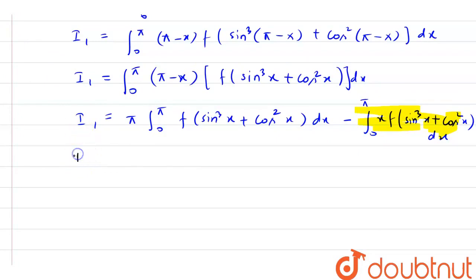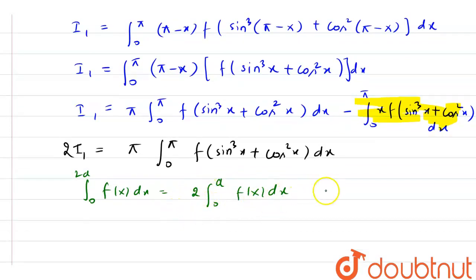Now, I am going to use another property that is if we have limit 0 to a, f of x dx, then I can write it as 2 times 0 to a by 2, f of x dx, when f of 2a minus x equals f of x.